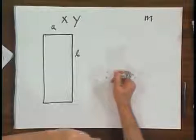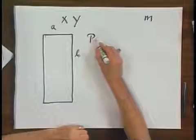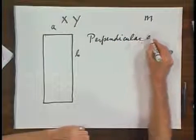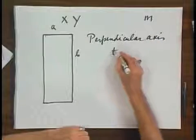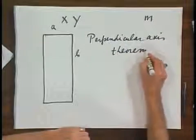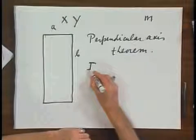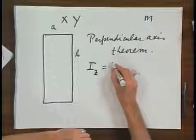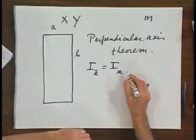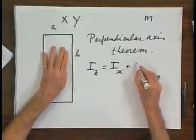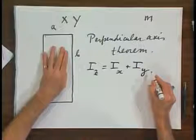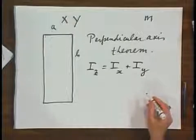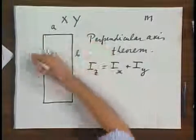What the perpendicular axis theorem tells me is that the moment of inertia about the Y axis, which I can choose in this plane, but X and Y are perpendicular to each other. You can choose X and Y in crazy ways.